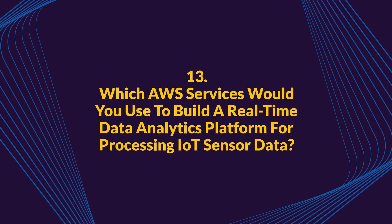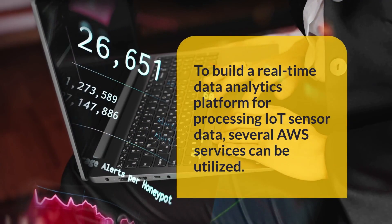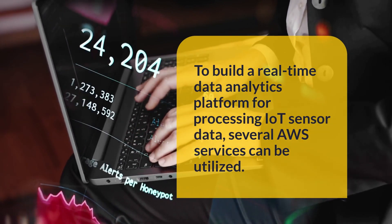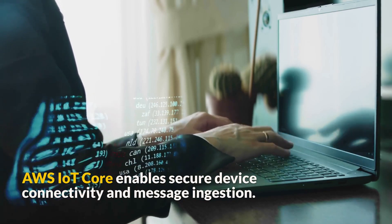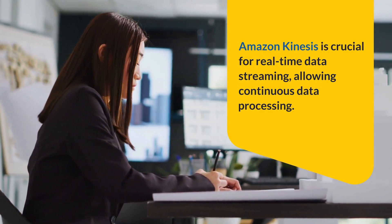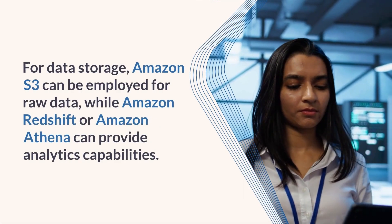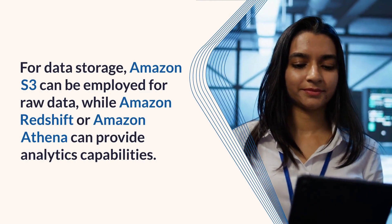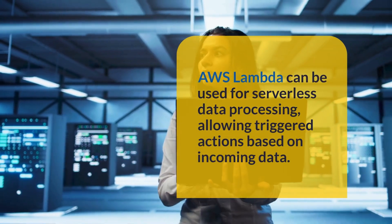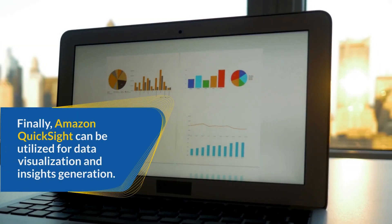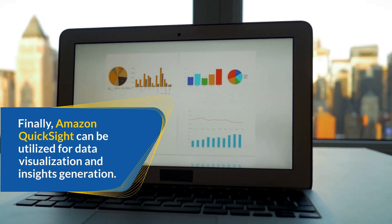Question 13: Which AWS services would you use to build a real-time data analytics platform for processing IoT sensor data? AWS IoT Core enables secure device connectivity and message ingestion. Amazon Kinesis is crucial for real-time data streaming, allowing continuous data processing. For data storage, Amazon S3 can be employed for raw data, while Amazon Redshift or Amazon Athena can provide analytics capabilities. AWS Lambda can be used for serverless data processing, allowing triggered actions based on incoming data. Finally, Amazon QuickSight can be utilized for data visualization and insights generation.